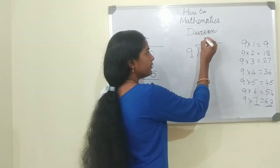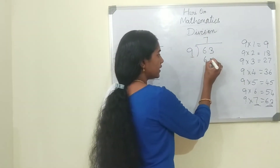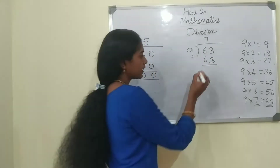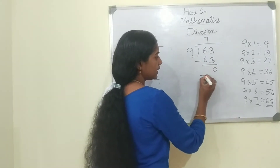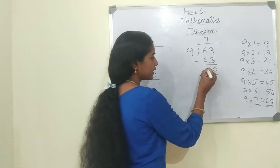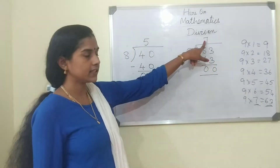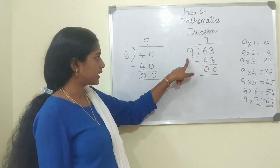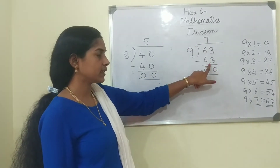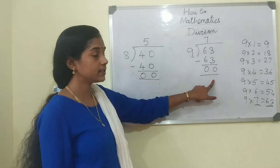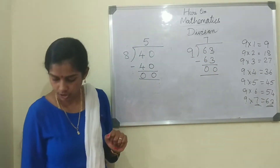We are going to write 7 over here. 9 sevens are 63 — now we have to subtract it: 3 minus 3 is 0, 6 minus 6 is 0. So 63 minus 63 is 0 and 7 is the answer. 9 sevens are 63. Understood children?